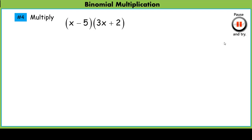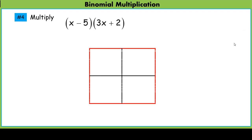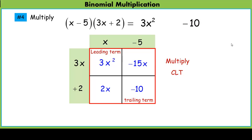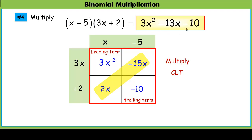Let's try another one. x minus 5 along the top, 3x plus 2 along the side. Multiplying, we get all the little sub-areas. Adding them up: leading term is 3x squared, trailing term is negative 10, and the linear terms add up to negative 13x. So we have our polynomial in standard form: 3x squared minus 13x minus 10.